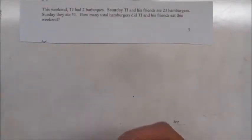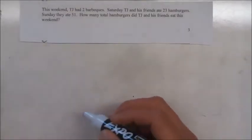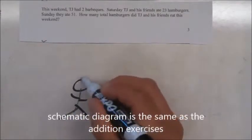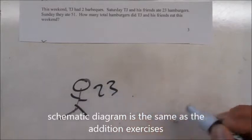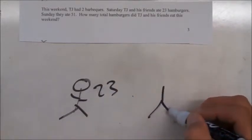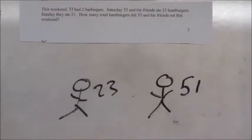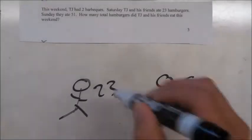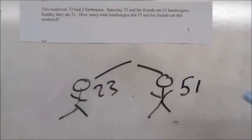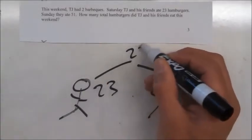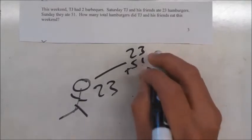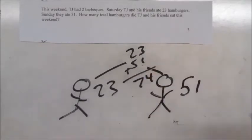Okay, so let's take a look at why this problem is addition. Says this weekend TJ had two barbecues. Saturday, TJ and his friends ate 23 hamburgers. Sunday, they ate 51. And it says how many total hamburgers did TJ and his friends eat this weekend? This is looking at the total, combining two numbers, so this is addition. We are combining 23 and 51, and 23 plus 51 is 74, so over the weekend TJ and his friends ate 74 hamburgers.